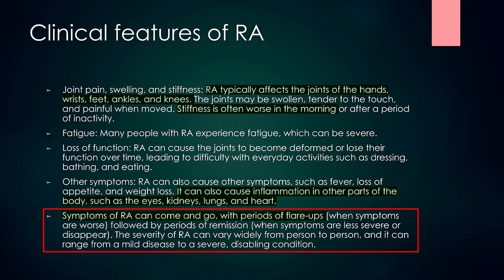The severity of RA can vary widely from person to person, ranging from a mild disease to a severe disabling condition. So when someone has a flare-up of chronic rheumatoid arthritis, we typically increase the dose of medicines they are already taking or add another medicine to their regimen.